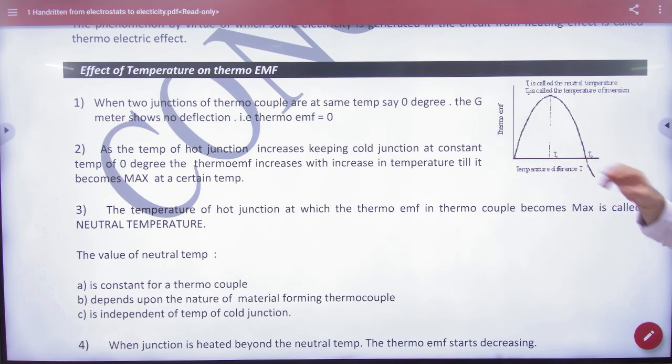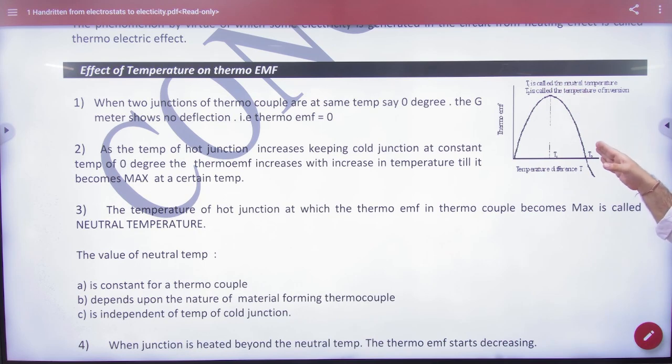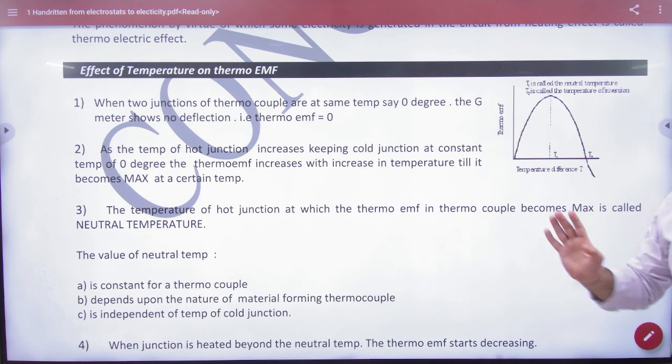When the temperature difference increases between hot and cold, then EMF will increase. The temperature difference will increase, EMF will increase. If we add more, the temperature difference will increase. If we add more, the direction of current will change and invert. So graph is a parabola - this should be known. This is the second observation.